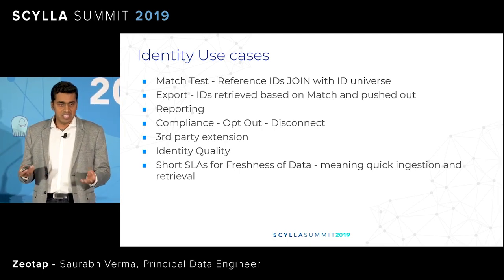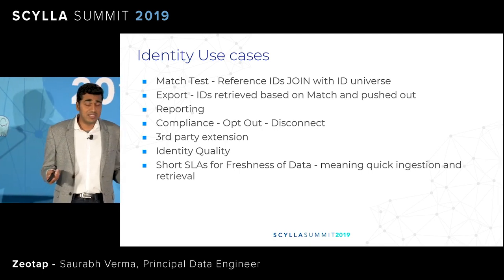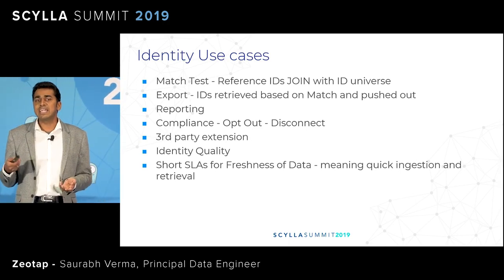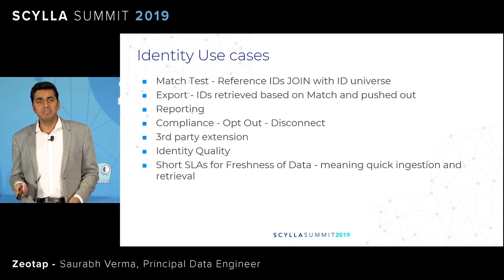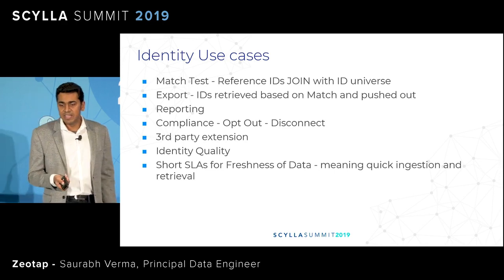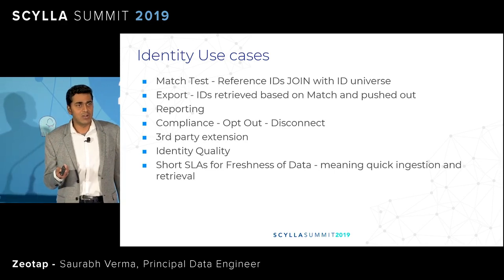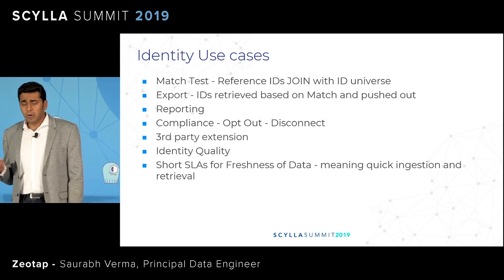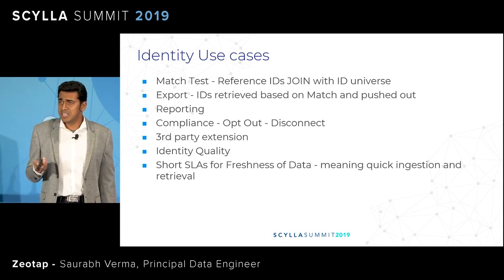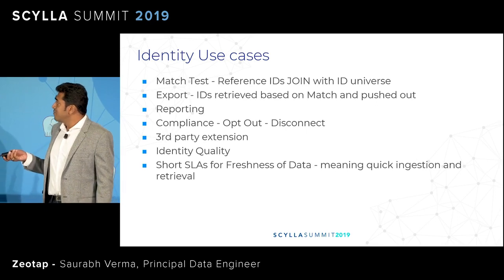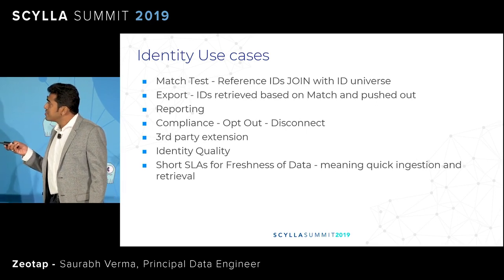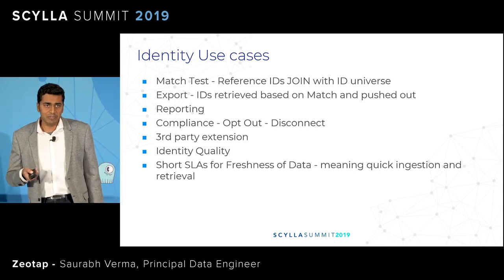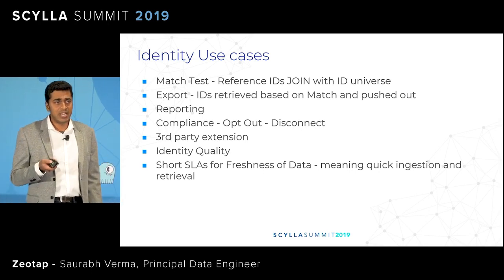Second is export: the customer is happy with the match test and wants to activate the IDs, in which case we retrieve the IDs from the graph and give them to the customer. The retrieval is called the export use case. Third is reporting, which is your classic counts and aggregations. Then, being GDPR compliant, we have to provide opt-out of any identifier when a customer asks for it.